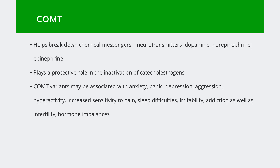Reduced clearance, and therefore high levels of catecholamines — dopamine, epinephrine, norepinephrine — and accumulation of catechol estrogens may result from reduced COMT enzyme activity. Symptoms that may be reported by those with COMT variants include anxiety, panic, depression, aggression, hyperactivity, increased sensitivity to pain, sleep difficulties, irritability, addiction, as well as infertility, hormone imbalances, and symptoms associated with those.